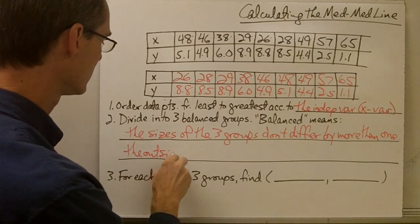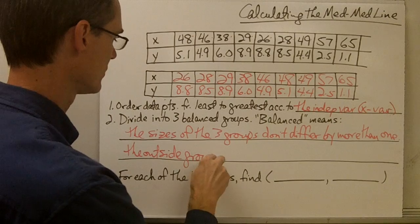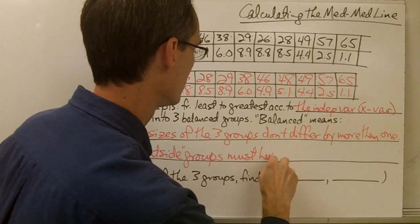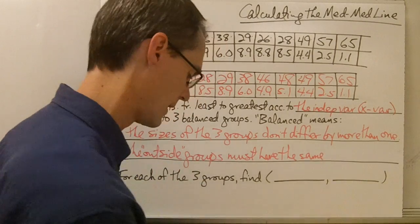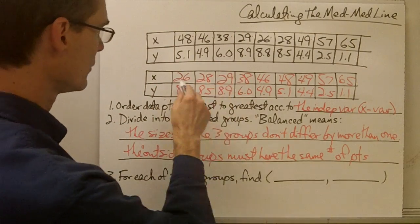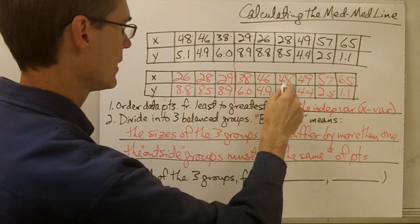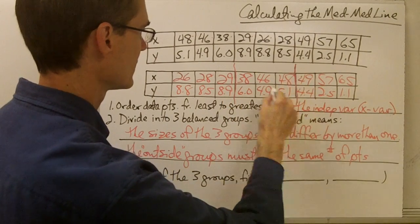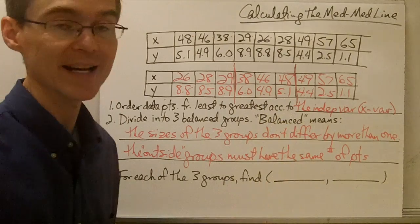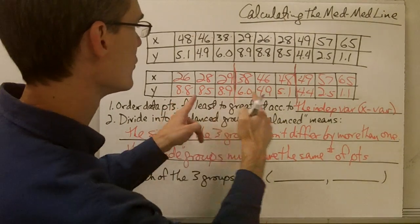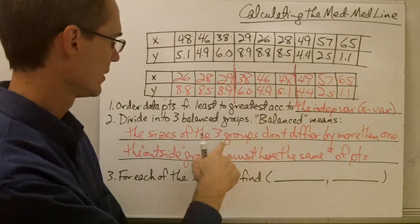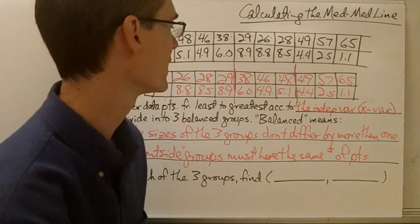The second thing is the outside groups must have the same number of points. So if I divide my data set into my three balanced groups, here are the three balanced groups for this data set. Each group has exactly three points in it — the sizes don't differ by more than one — and the outside groups, this group and this group, have the same number of points: three and three. This will be slightly different when we look at data sets that are not evenly divisible by three.